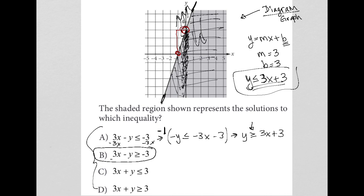If we just do the math here: minus 3x minus 3x, I have negative y is greater than or equal to negative 3x minus 3. And again, when I multiply everything by negative 1, this becomes y is less than or equal to positive 3x plus 3, which is exactly what I wanted it to be. So the answer is choice B.